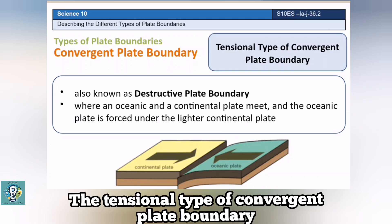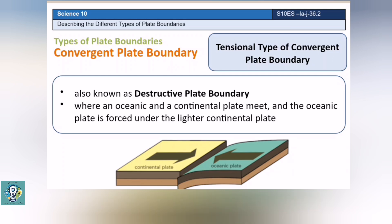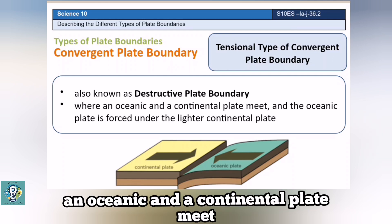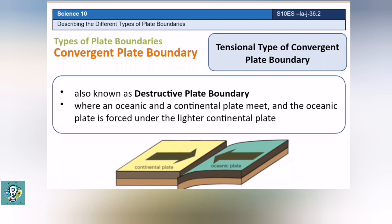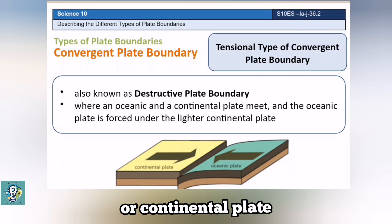The tensional type of convergent plate boundary is also known as destructive plate boundary. In this boundary, an oceanic and a continental plate meet. The oceanic plate is forced under the lighter continental plate.